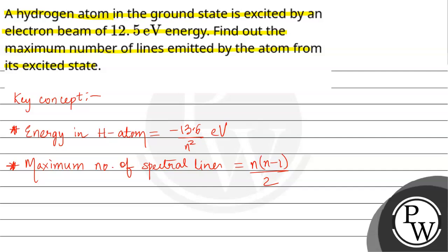Hydrogen atom in the ground state is excited by an electron beam of 12.5 electron volt energy. Energy in the ground state E1, that is minus 13.6 by n squared for n equals 1, so minus 13.6 electron volt.